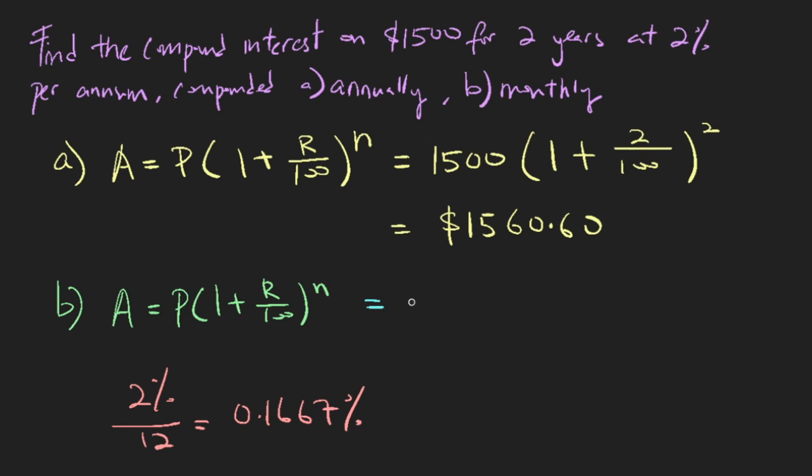So we work this out. So $1,500, 1 plus 0.1667 over 100, compounded 24 times because there are 24 months. $1,561.16. So as you can see, it is always far more favorable for you to compound as much as possible.